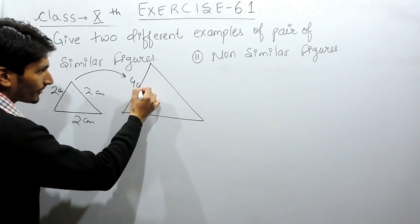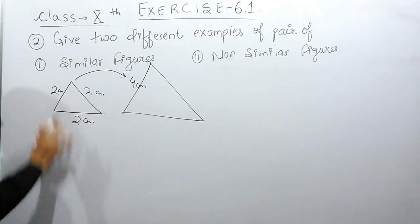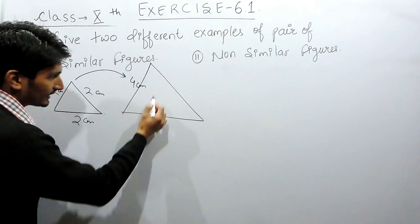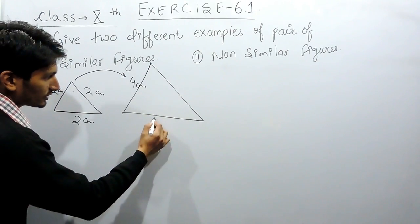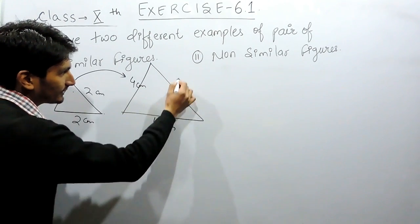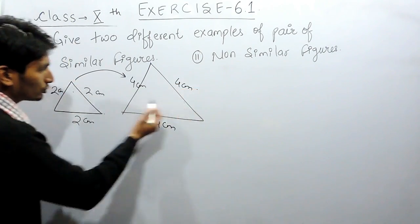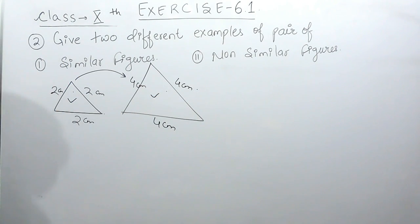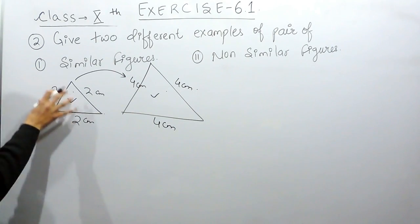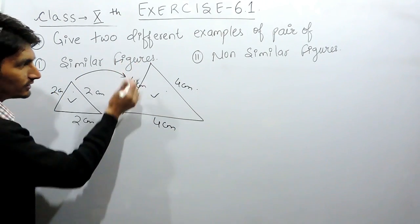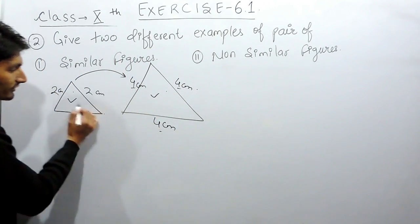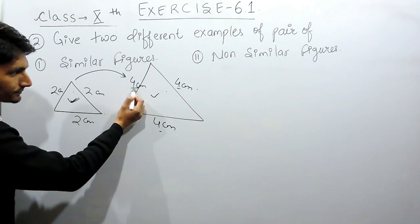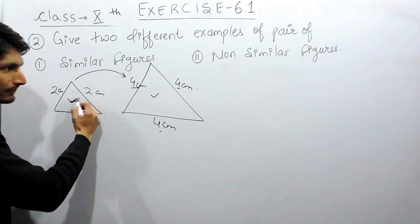...I am looking at this triangle in a magnifying glass and it now looks like a triangle of side 4 cm. So I will say that this triangle and that triangle are similar triangles, because the same triangle has been magnified to twice — the shape remains the same but the size has been increased two times.